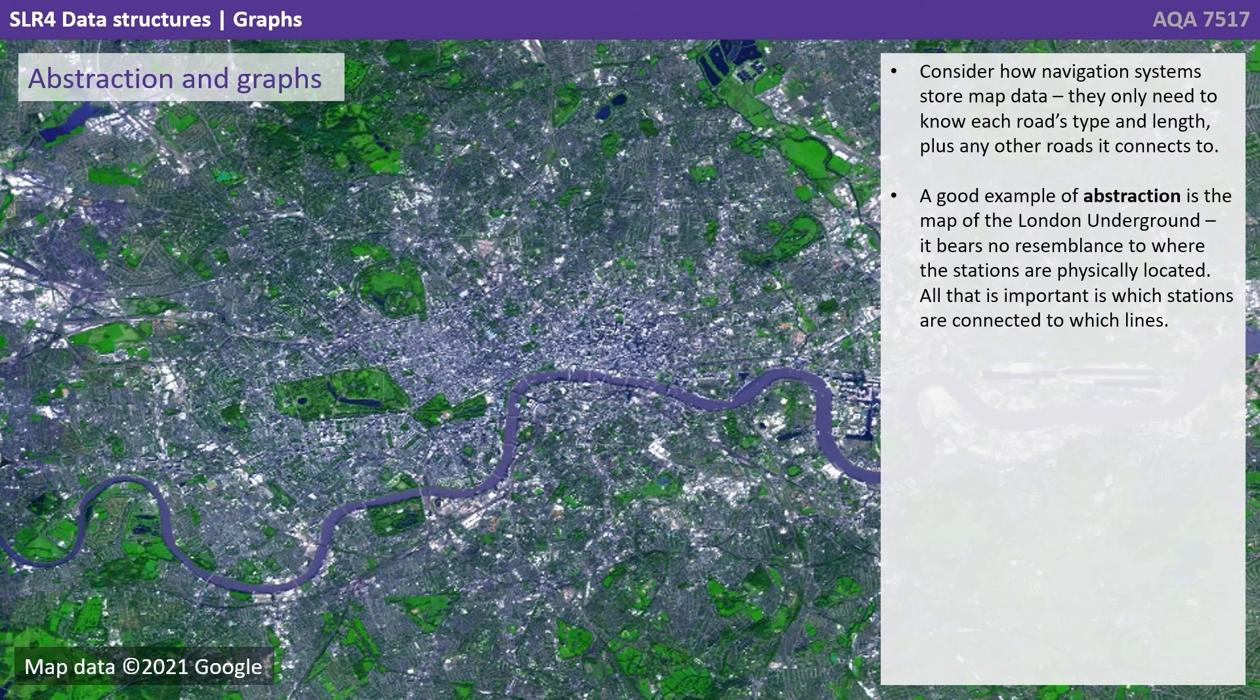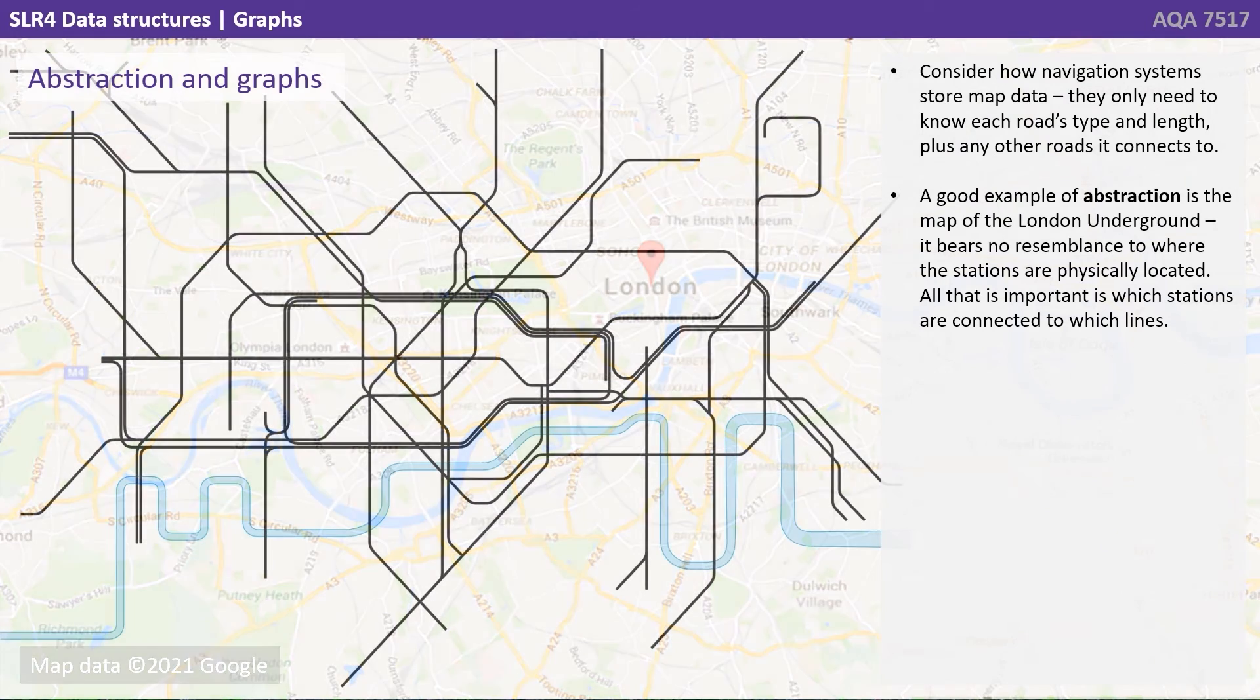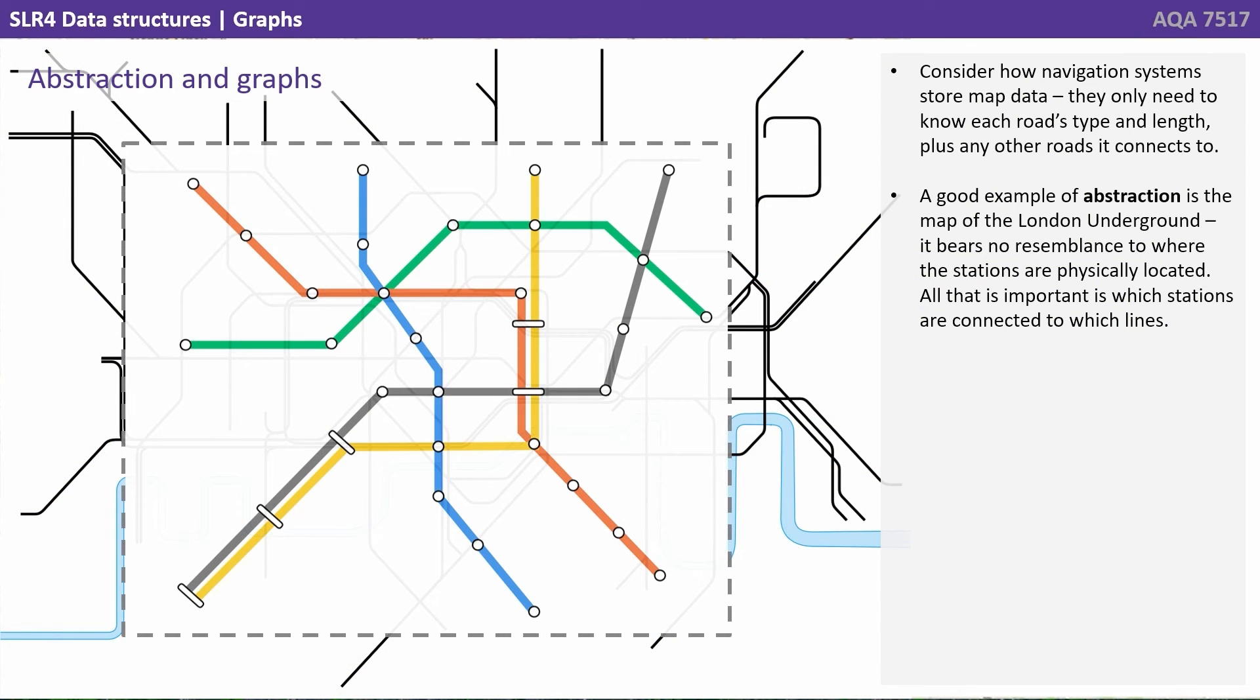Consider how navigation systems store map data. They only need to know each road's type and length, plus any other roads it connects to. A good example or abstraction is the map of the London Underground. It bears no resemblance to where the stations are physically located. All that is important is which stations are connected to which lines.